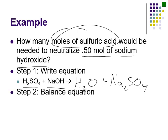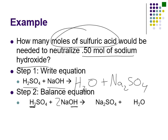Now balance the equation. Focus on hydrogen and hydroxide — one of each makes water. H₂SO₄ has two hydrogens, so we need two hydroxides. That means we need two sodium hydroxides, which gives us two waters, and that also balances the sodium. A key tip when balancing a neutralization reaction: focus on the hydrogen and hydroxide, since it's always one of each to make water, and make sure those amounts are equal.